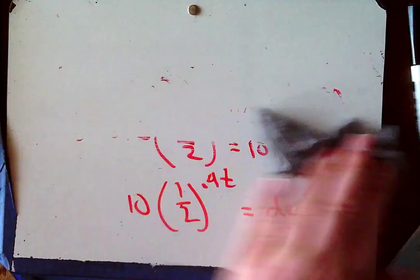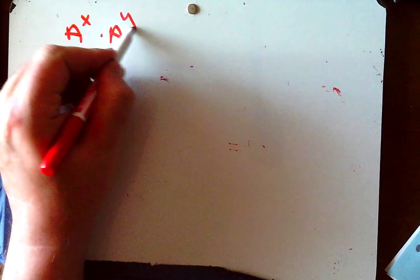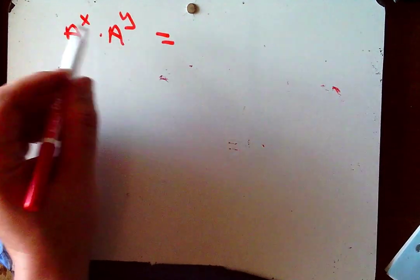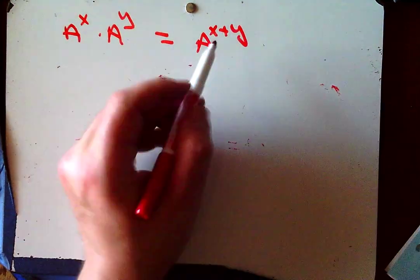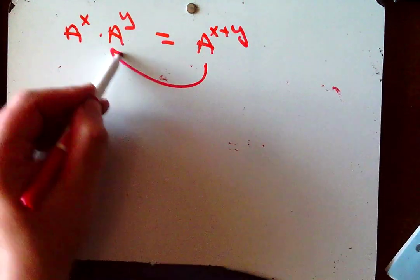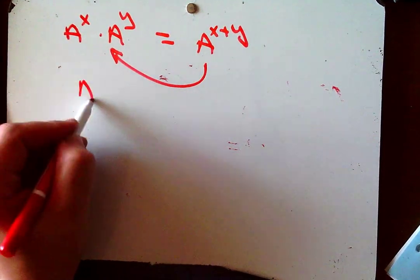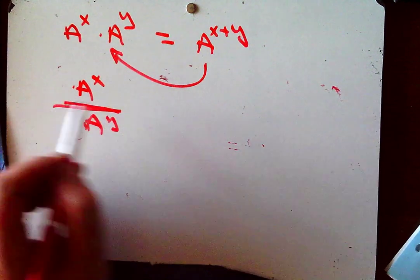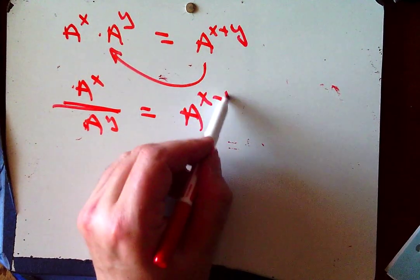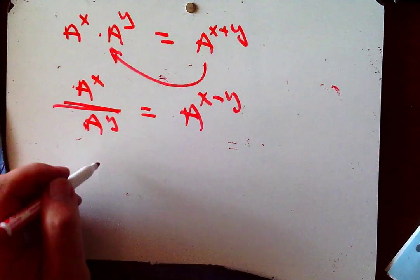You know some exponential rules: A to the x times A to the y — when the bases are the same and you're multiplying, you add the exponents. Just like if you see adding exponents, you could go the other direction. When you have two exponentials with the same base and you're dividing, that's A to the x minus y. Many students are reluctant to use this one, but subtracting the exponents works well.